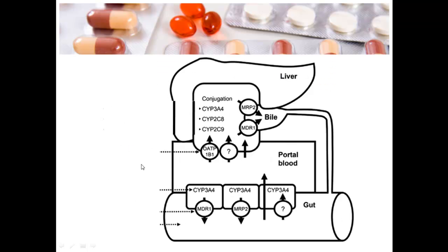Here's a diagram illustrating that. At the bottom, the MDR1s represent the P-glycoproteins — you can see them right at the gut wall, protecting it and shoving things back out into the gut lumen to be discarded into the feces. We also have CYP enzymes shown there protecting the gut, and up here in the liver we have CYP enzymes like 3A4, 2C8, and 2C9 — we'll talk about those differences more shortly.